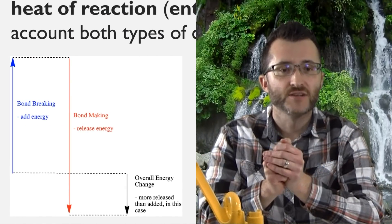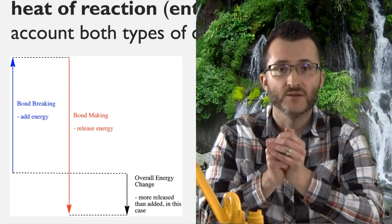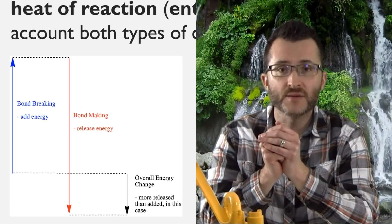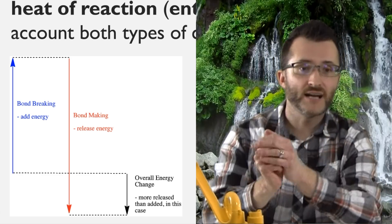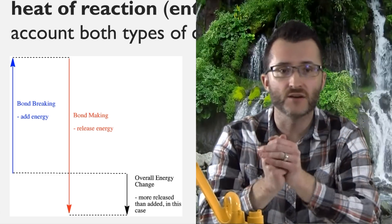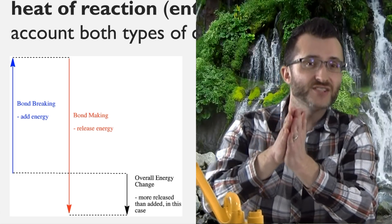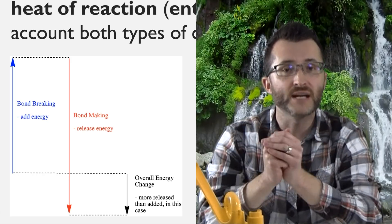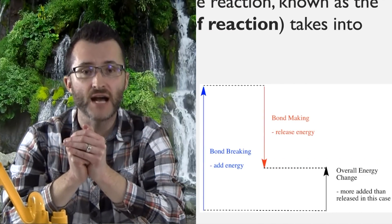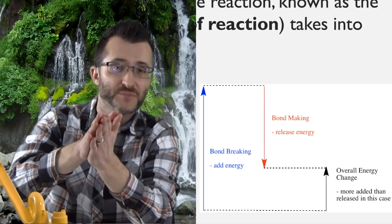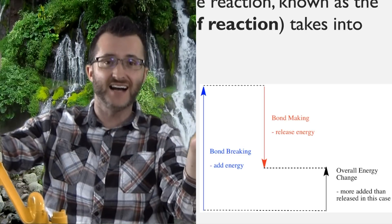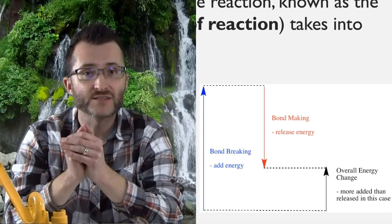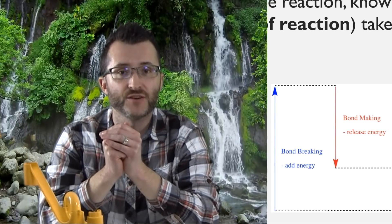The overall energy change of the reaction, known as the heat of reaction or enthalpy of reaction, takes into account both types of changes. If we take a look at the image to the left, we are first breaking bonds — inputting energy to break bonds. But after that, we are releasing energy to make bonds. Because we only put a little bit of energy into breaking but released a lot of energy at the end, overall we are exothermic. In the image on the right, we add a lot of energy to break bonds but only release a little to make new bonds, so overall that reaction is endothermic.